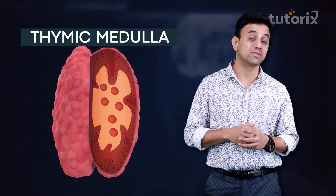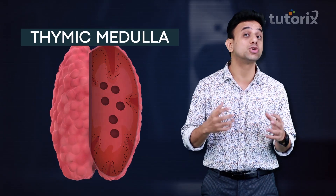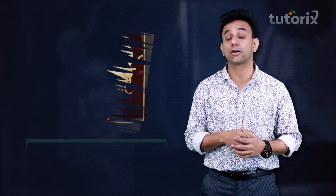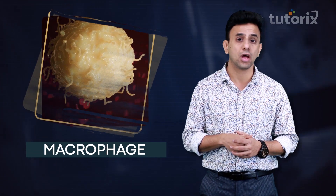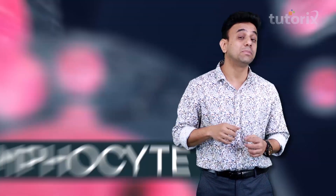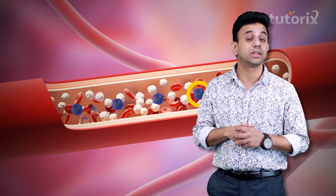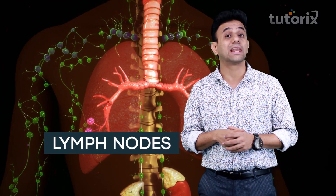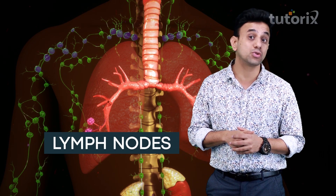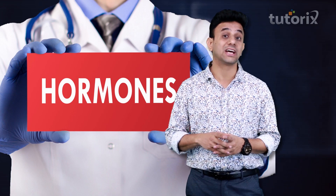The medulla region of the thymus consists of more mature T lymphocytes, dendritic cells, and macrophages. The T lymphocytes that mature here enter the bloodstream, and from the bloodstream they will reach the lymph nodes and other lymphatic tissues of the body.